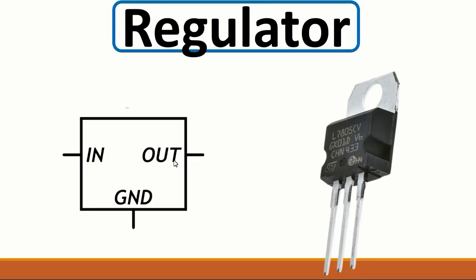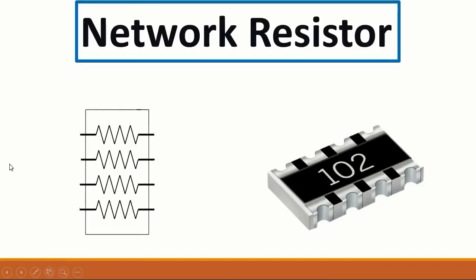For example, the input could be 12 volts and the output is 5 volts, or the input could be 5 volts and the output could be 3 volts. Then we have network resistors — this kind of resistor is a combination of many resistors. It could be 3, 4, 5 or more. This value means 1000 ohms or 1k ohm — here we have '10' and two zeros after it, meaning 1000 ohms.